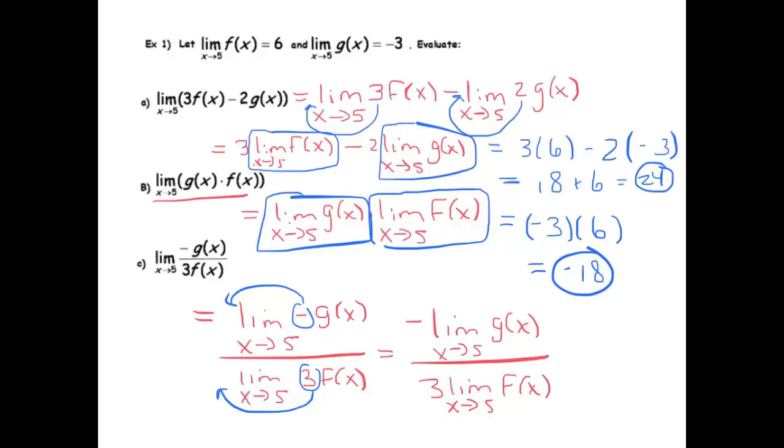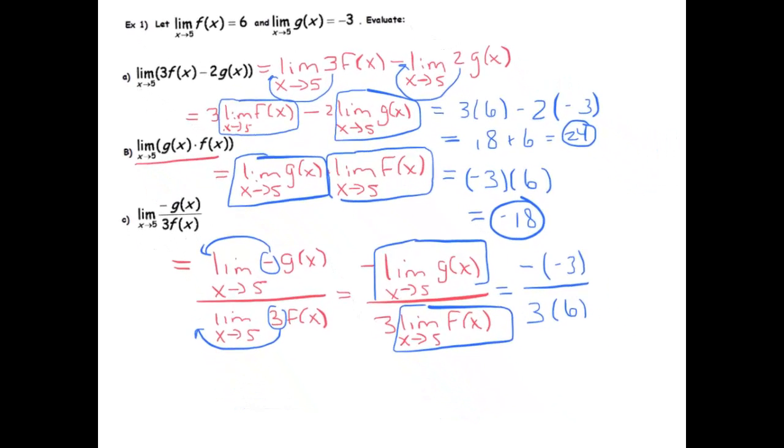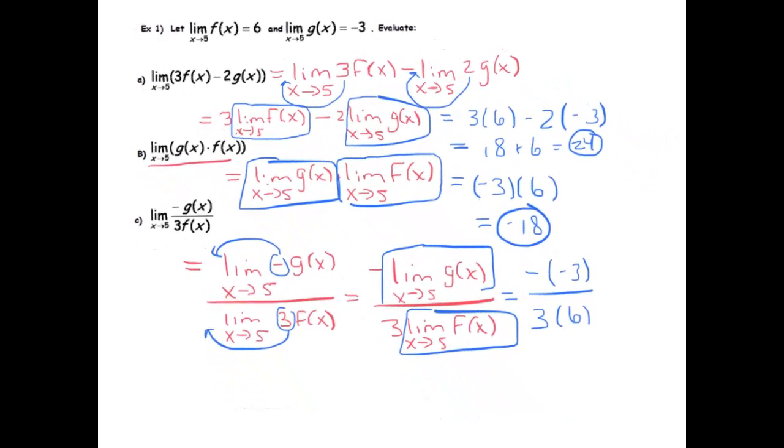And now I can substitute those values. So I've got negative g(x), the limit of g(x) as x goes to 5 is negative 3, so I've got a negative negative 3. And then the bottom I've got 3 times 6, which is 18. So at the end of the day, the final answer is 3 out of 18, or we can call that 1 sixth.